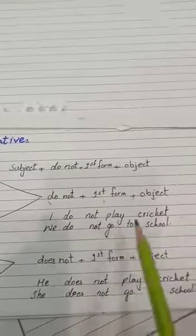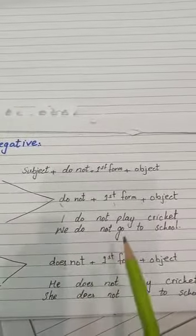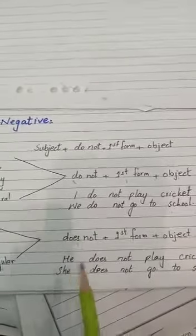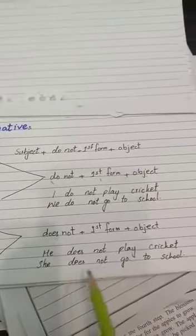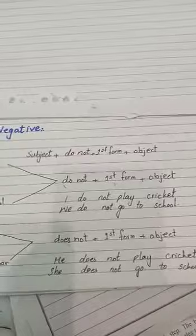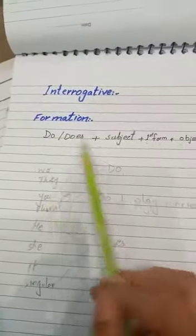And then interrogative. What is the formation? Our helping verb is do or does. So do, does will come to start, then subject, plus first form, plus object.